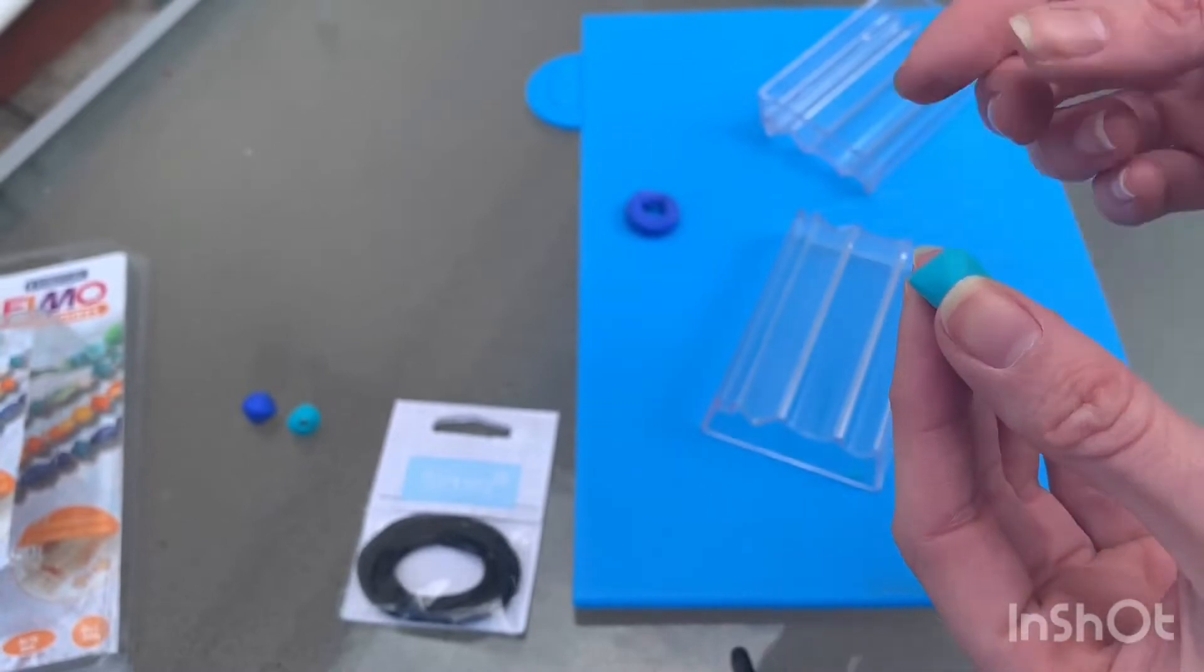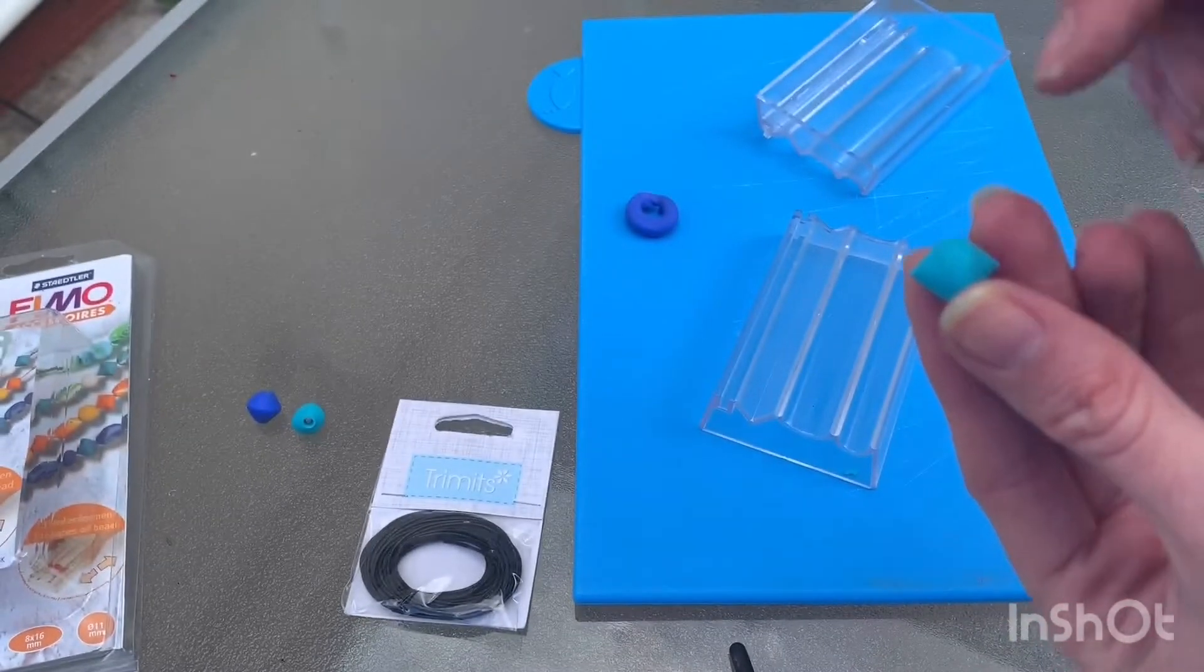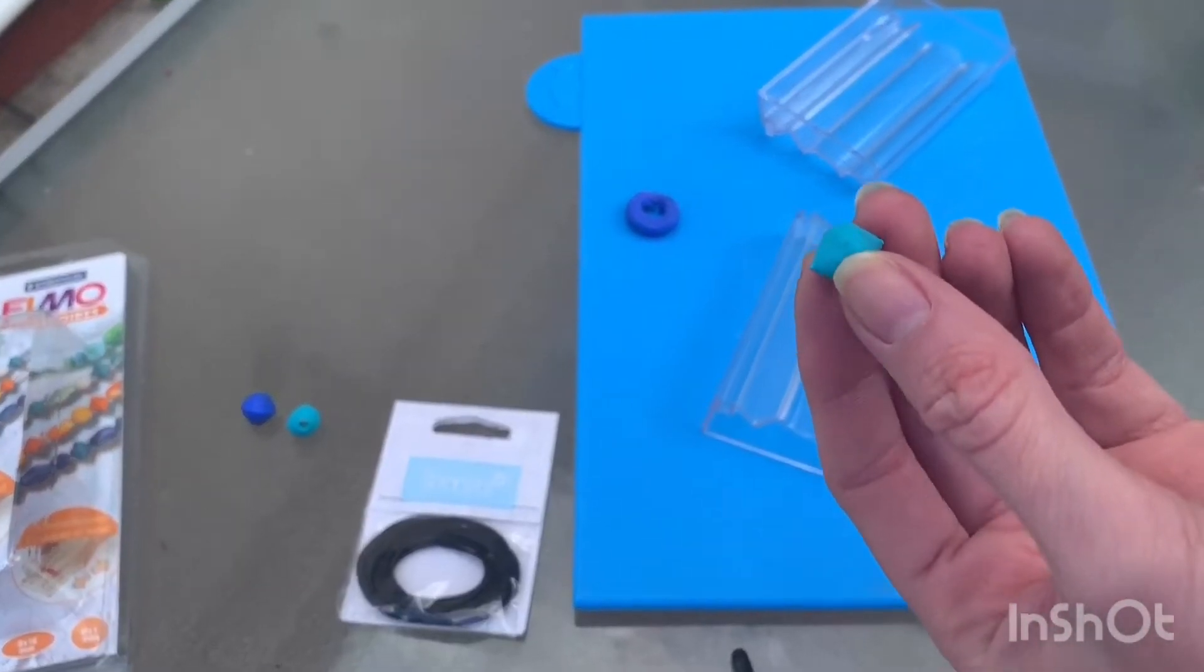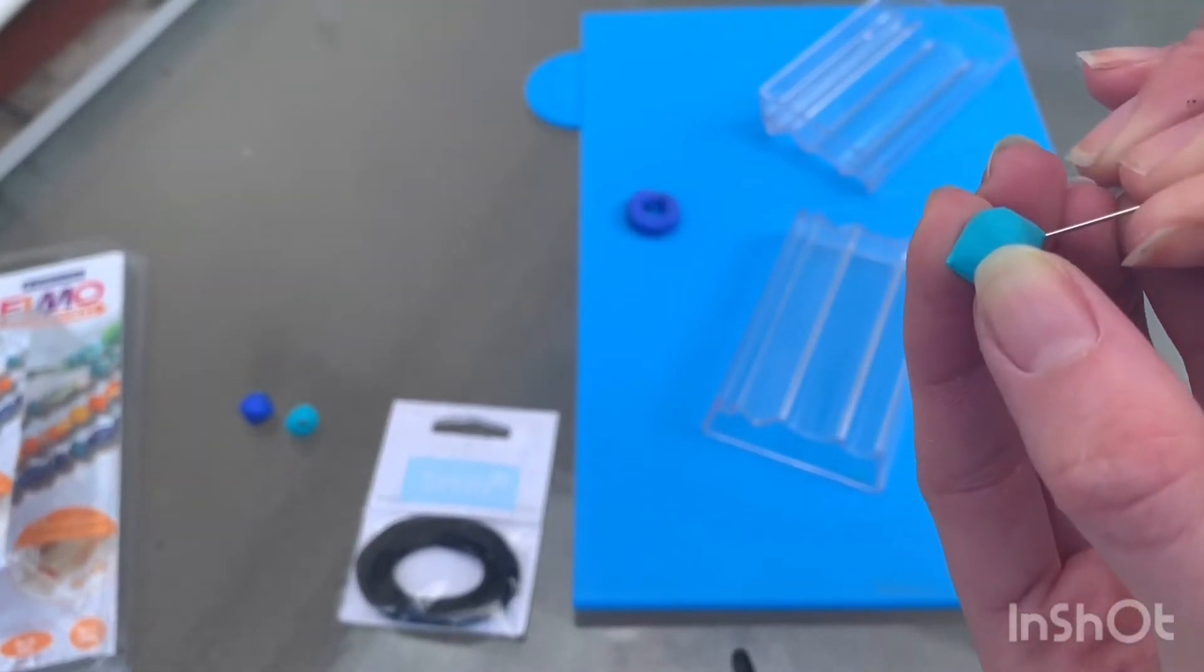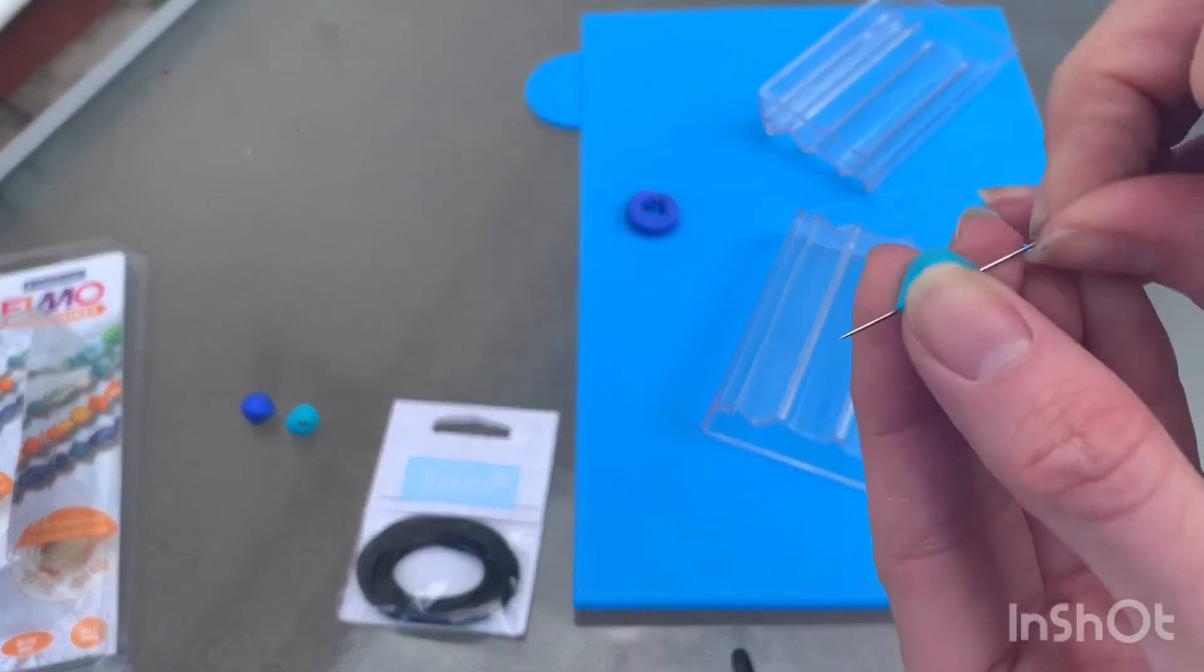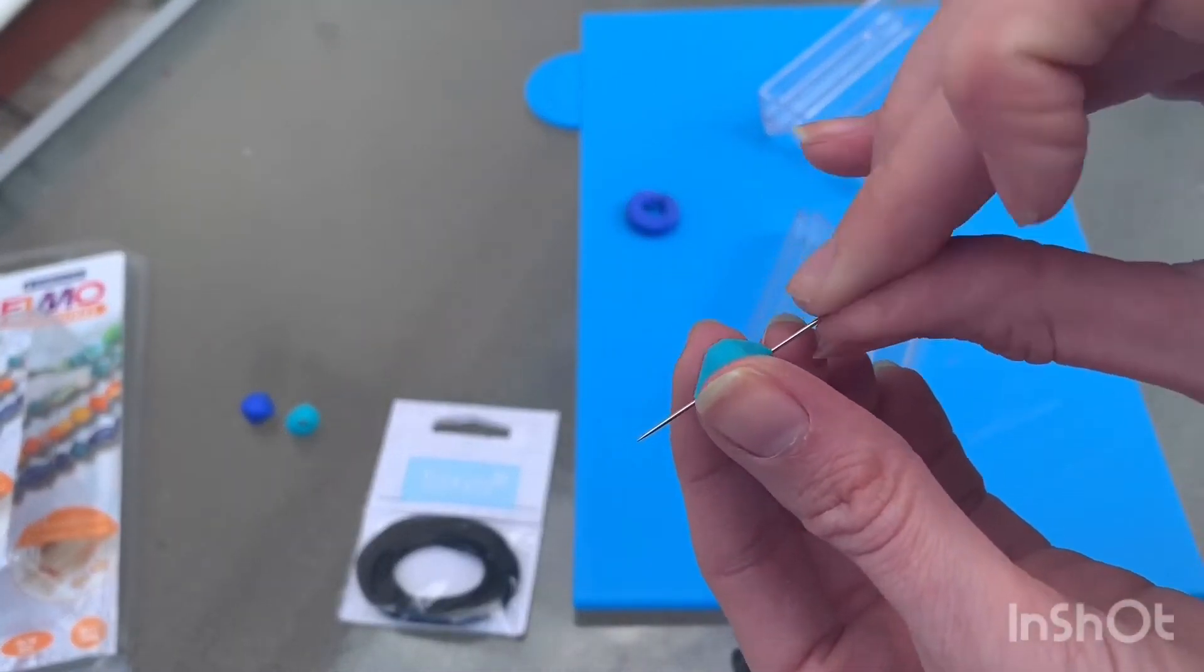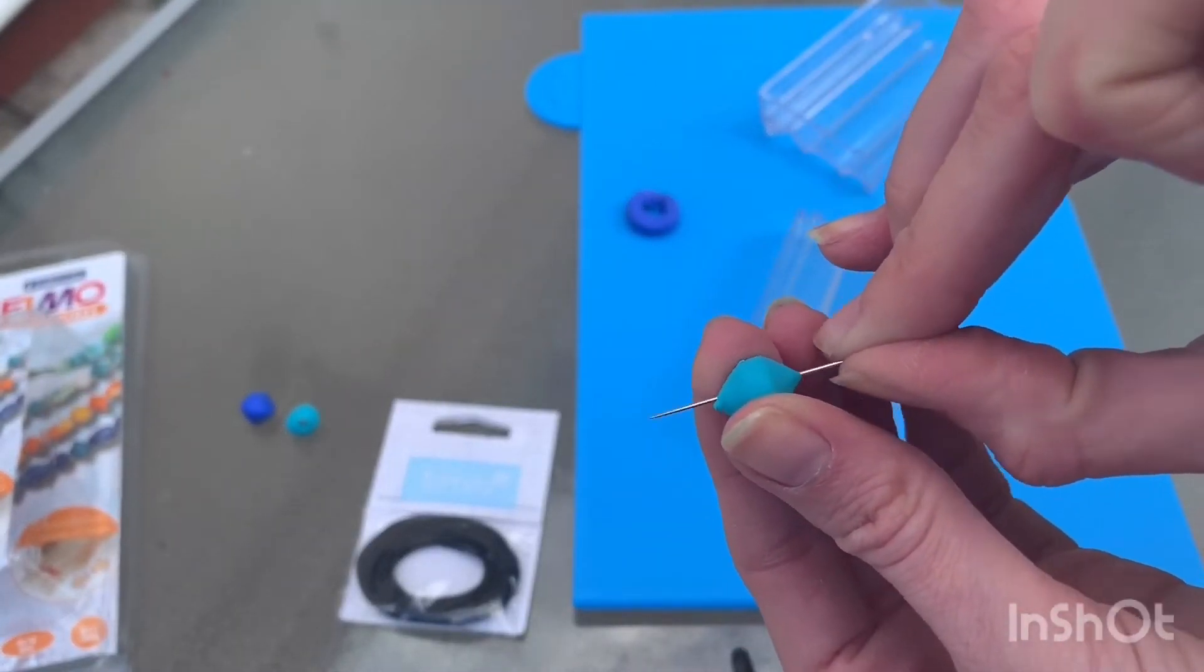So now you just need to take your needle, pop it through the end, all the way through, give it a bit of a wiggle, widen the hole.